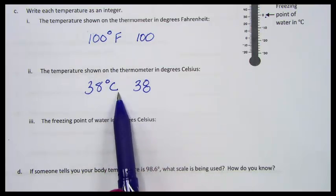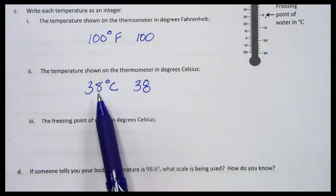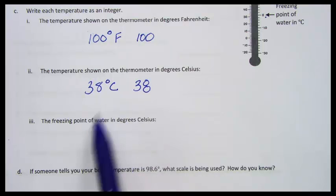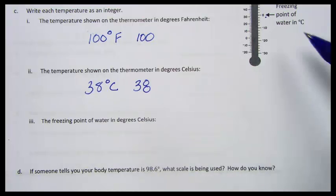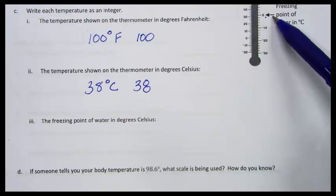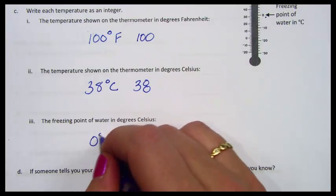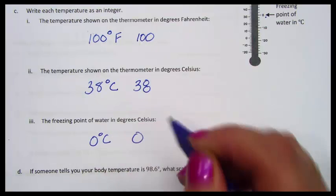These two numbers are the same. On our picture, they were right across from each other like on a double number line. Now it asks us to find the freezing point of water in degrees Celsius. There's the label. Here's an arrow. It's at zero degrees Celsius. So that integer would be zero.